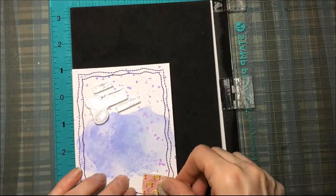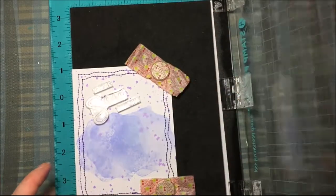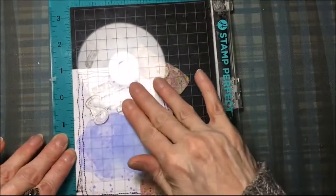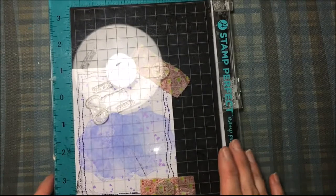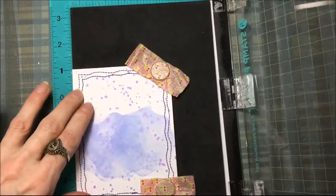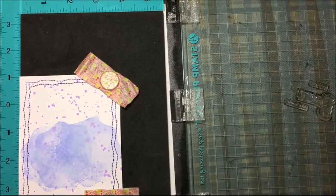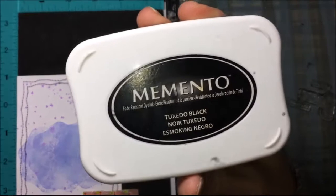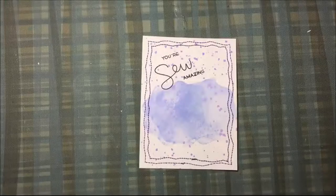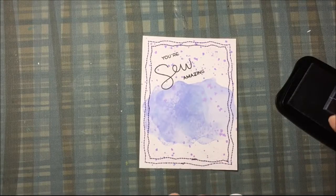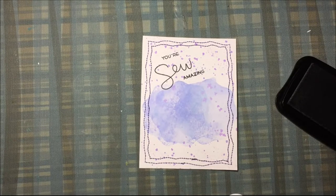From the stamp set I picked the words Your, So, S-E-W, Amazing. I'm putting those on the card panel, and I'm putting them crooked. Because remember, if you put them crooked you don't have to worry about getting them straight. I'm using that same ink pad, the Memento Tuxedo Black ink, and I'm just going to stamp those out on the front of my card panel. I don't want to forget about the exclamation mark. So I'm using a tiny stamp block, and I'm just putting that exclamation mark after the word Amazing.